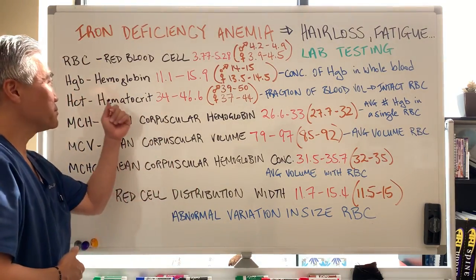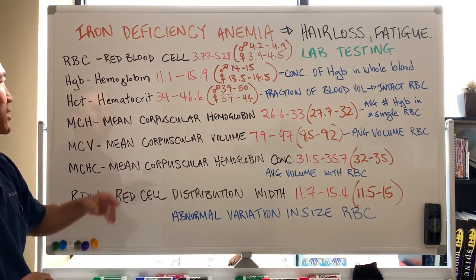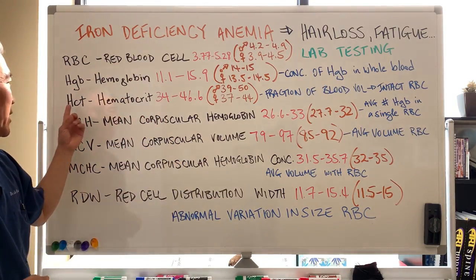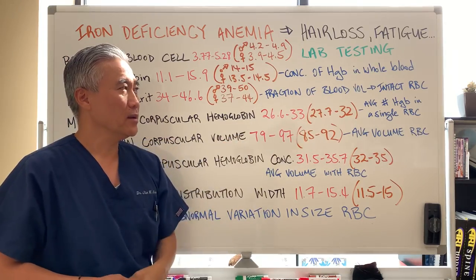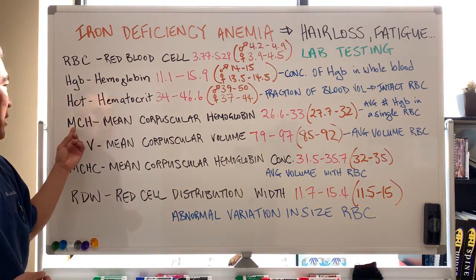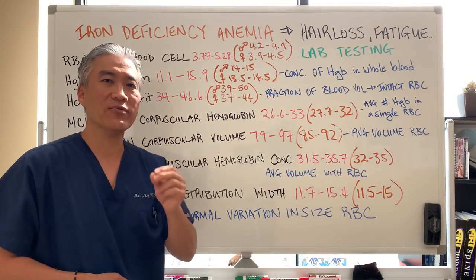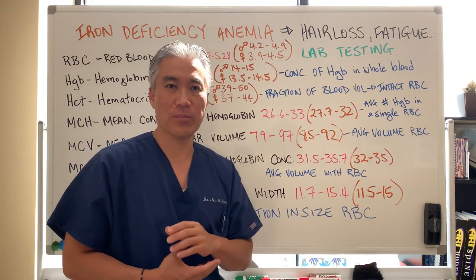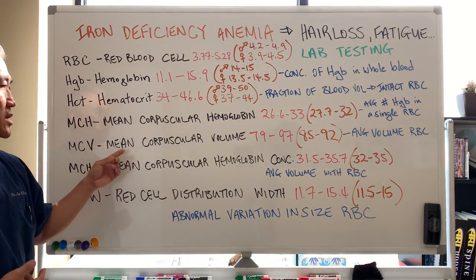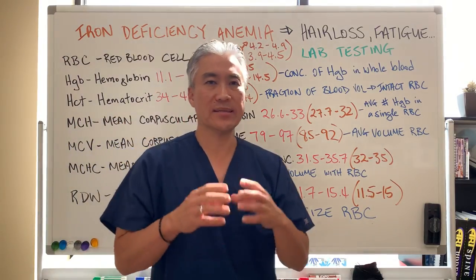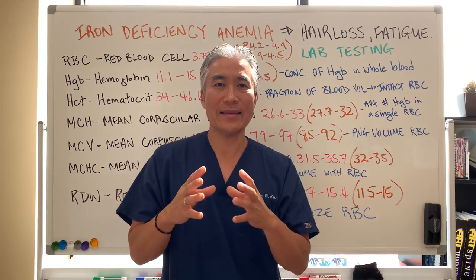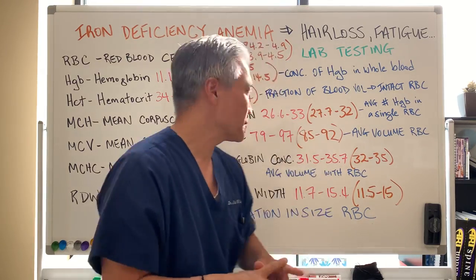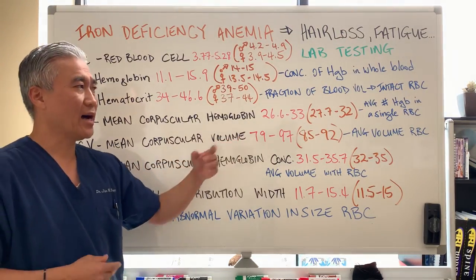Red blood cells have a concentration of hemoglobin in them. Hemoglobin is the hemoglobin in the whole blood. Then you have hematocrit, which is a fraction of blood volume that's intact in red blood cells. MCH, or mean corpuscular hemoglobin, is the average number of hemoglobin in a single red blood cell. MCV is mean corpuscular volume — the size of the red blood cell. When it's very small, it indicates iron deficiency; if it's very large, it's a B12 or B9 anemia.